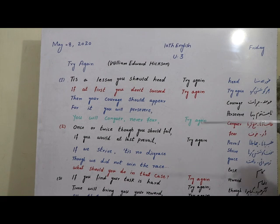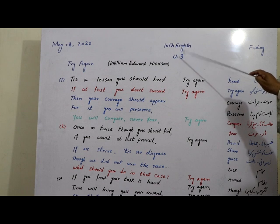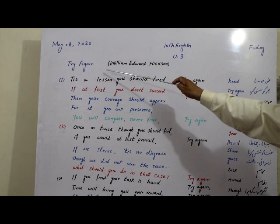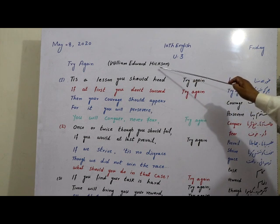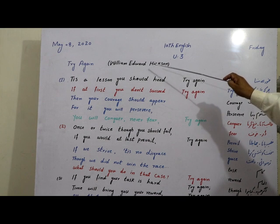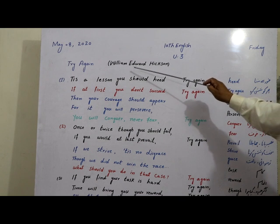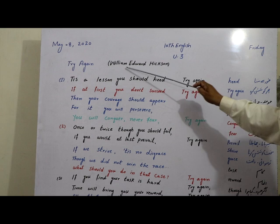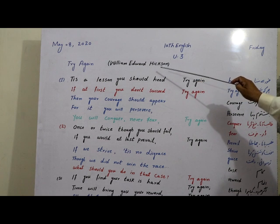Dear students, today we will start our unit number 3 and this is poem Try Again by William Edward Hickson. Dear students, before the poem, we must know about William Edward Hickson, the writer of this poem.